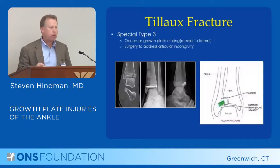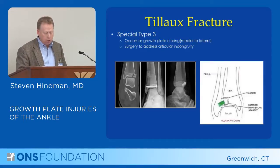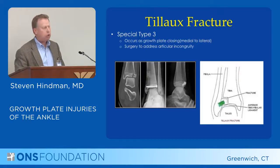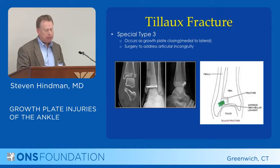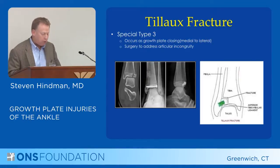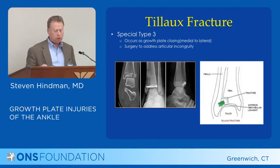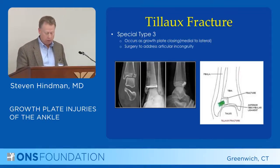A special version of the Salter-3 injury is called the Tillaux fracture, which occurs as growth is ending. The ankle growth plate closes from medial to lateral as you grow, leaving a bit of open growth plate laterally. As you twist your ankle, the ligament pulls that open growth plate apart. Treatment is to fix it primarily because the joint surface is gapped. Since growth is nearly closed, this rarely causes significant growth disturbance, but it's a special fracture that occurs at the end of growth.